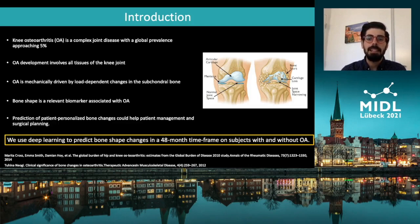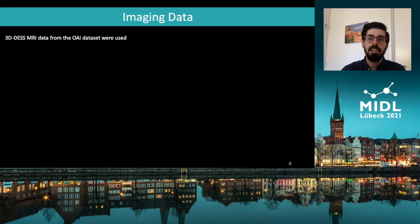With that in mind, in this study we aim to explore the usage of deep learning to predict bone shape changes in a time frame of 48 months on subjects with and without OA. We used 3D sagittal MRI sequences from the OA Initiative, where almost 5,000 subjects were scanned at 7 different time points spanning over 8 years.